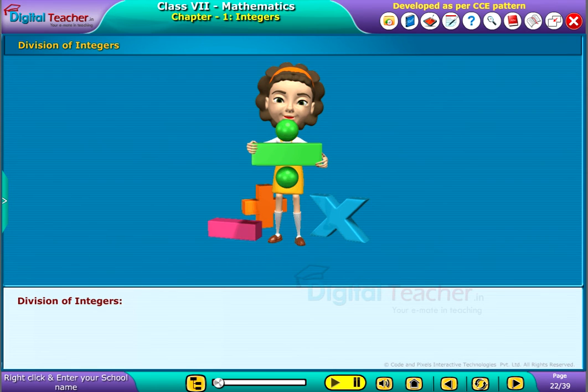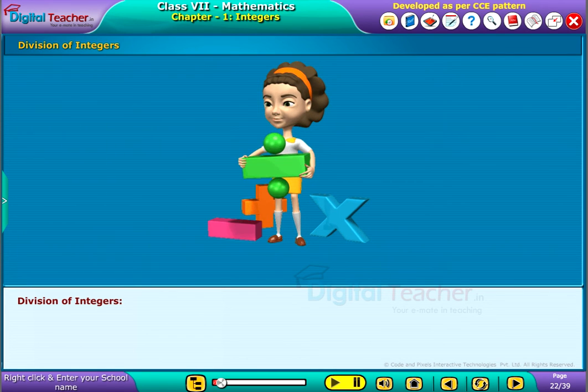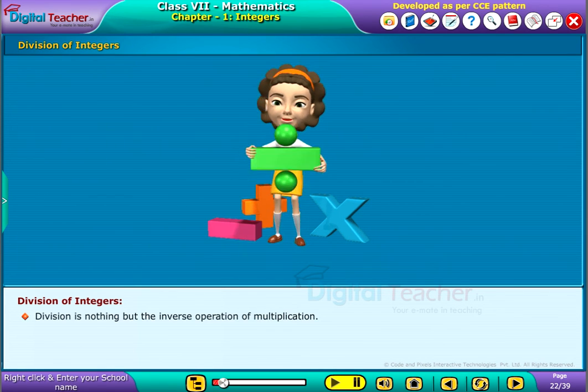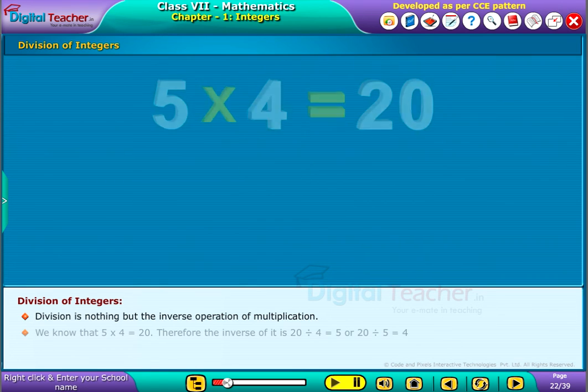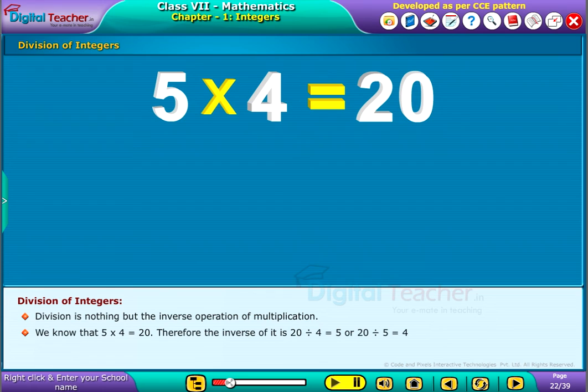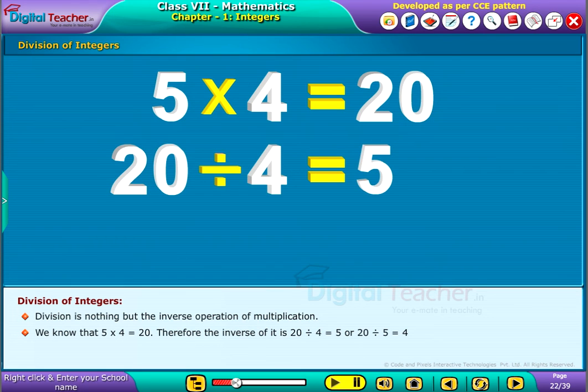Now let us study the division of integers. Division is nothing but the inverse operation of multiplication. We know that the product of 5 and 4 is 20, therefore the inverse of it is 20 divided by 4 which equals